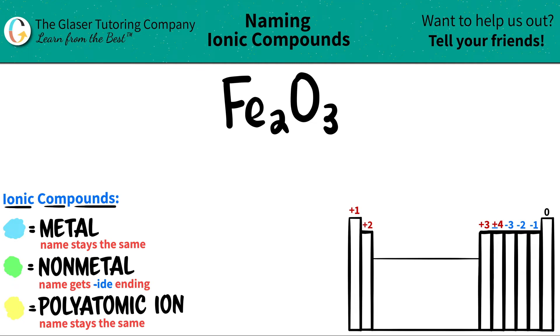Today we are going to be naming the ionic compound Fe2O3. So now we have two elements. We have iron, which is Fe, and we have oxygen, which is O.